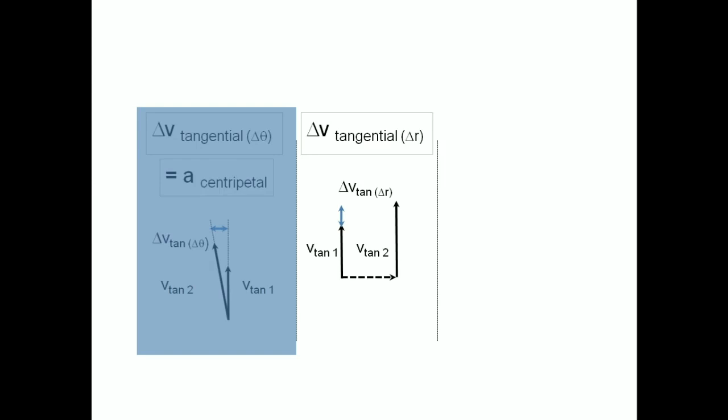And the third, the angle of the radial velocity of the slider has changed by delta theta. Note that the radial speed has remained constant, however the velocity has changed direction.